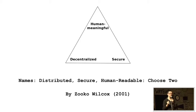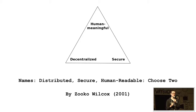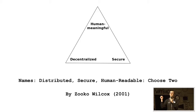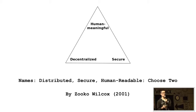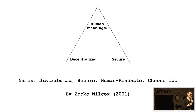You can have a name that is human meaningful and secure but not decentralized — for example, archive.org. That name makes sense to you and it's secure because only the Internet Archive can use it, but it's not decentralized because it's controlled by a centralized company called ICANN. Finally, you can have a name that is decentralized and secure but not human meaningful, like a PGP key — decentralized because anyone can create one, secure because you keep the private key, but just a long string of numbers and letters.